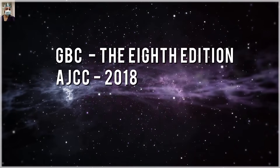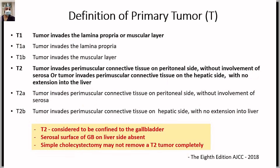Briefly, we will discuss AJCC staging according to the 8th edition and demonstrate differences from the 7th. T1 is when the tumor invades the lamina propria or muscular layer. Unlike other hollow viscous organs where T2 involves the muscle layer, there is no submucosal layer in the gallbladder. Therefore T1A is lamina propria involvement, and T1B is muscular layer involvement — which would be considered submucosal in other organs. T2 is when the tumor goes beyond the muscle layer into the perimuscular connective tissue.